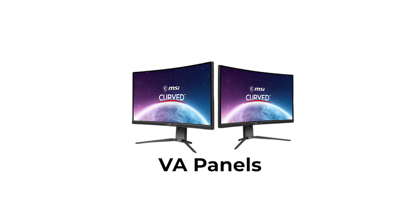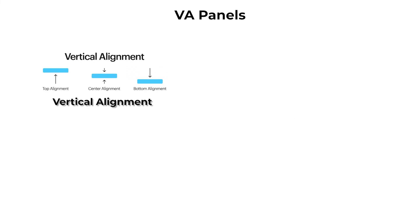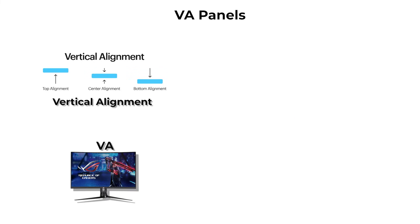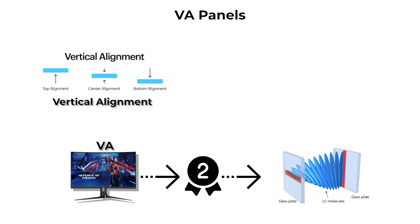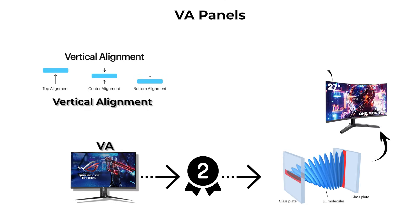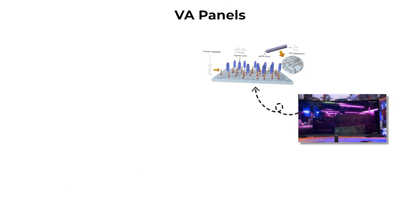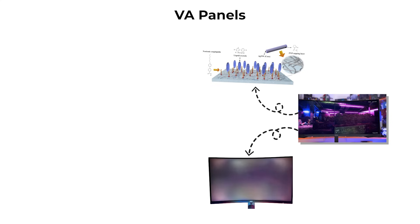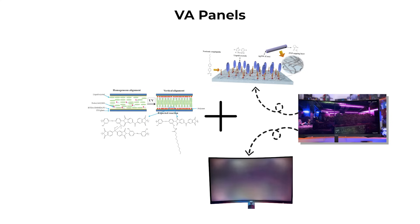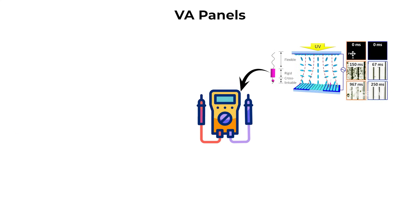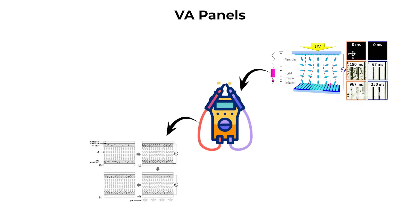VA panels. Vertical alignment, or VA, is the second major liquid crystal display panel technology. Unlike TN, where the crystals twist, VA panels align their liquid crystals vertically when no voltage is applied. When voltage is added, the crystals tilt to let light through.